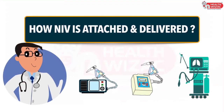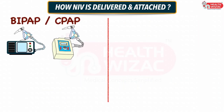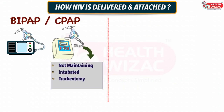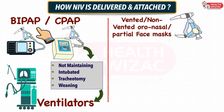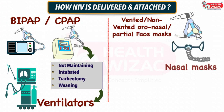How is NIV delivered and attached? NIV is delivered primarily through a BiPAP or CPAP machine. But if the patient is not maintaining on a smaller machine, or if the patient is already intubated or a tracheostomy is done and a weaning process has to be attempted, then ventilators are also used to deliver NIV. The patient is connected to a BiPAP or CPAP machine via a vented face mask, which may be an oronasal or partial face mask, nasal mask, or helmet.